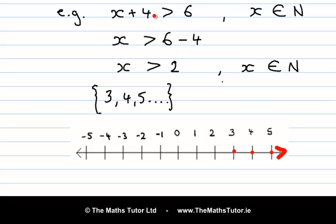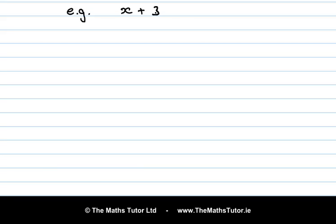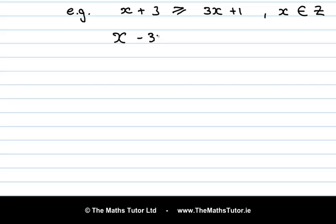So we've simplified our original inequality, listed the elements of the solution, and also plotted them on a number line. Let's try another one. This time we have x plus 3 greater than or equal to 3x plus 1, and x is an element of ℤ. So we solve this as usual — let's get all the x terms on one side and all the number terms on the other. Bringing across the 3x it becomes minus 3x, greater than or equal to 1, and bringing across the plus 3 it becomes minus 3. So x minus 3x is minus 2x, greater than or equal to minus 2.